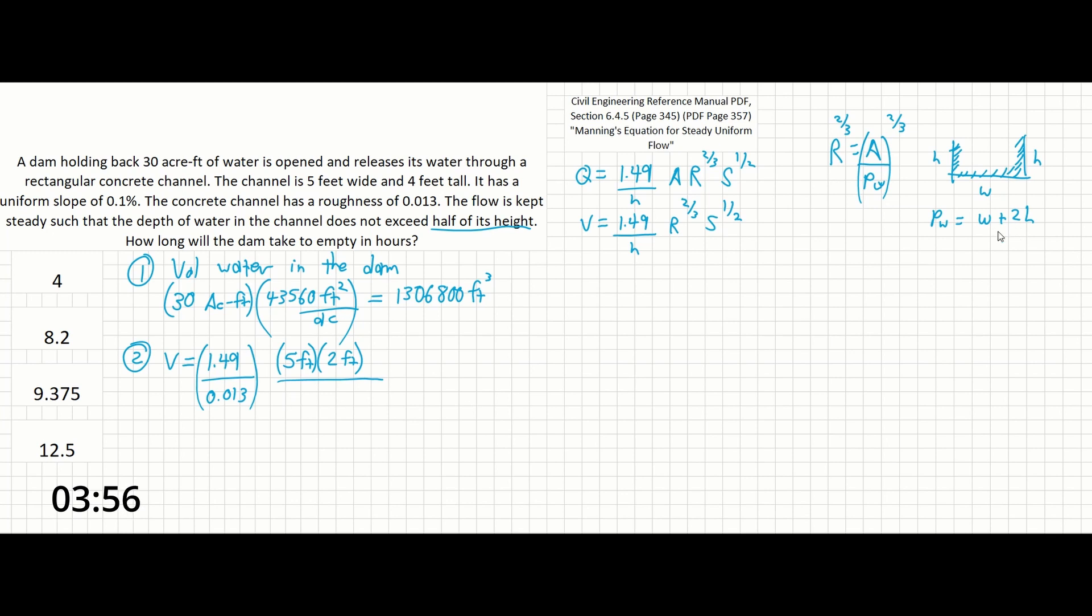And that's going to be over the wetted perimeter here, so 5 feet plus 2 times 2 feet. And all of that in this case is to the two-thirds. And then finally, we're going to have our slope, which said it's 0.1, so that's going to be 0.001 when it's not expressed as a percent. And that's going to be to the one-half.